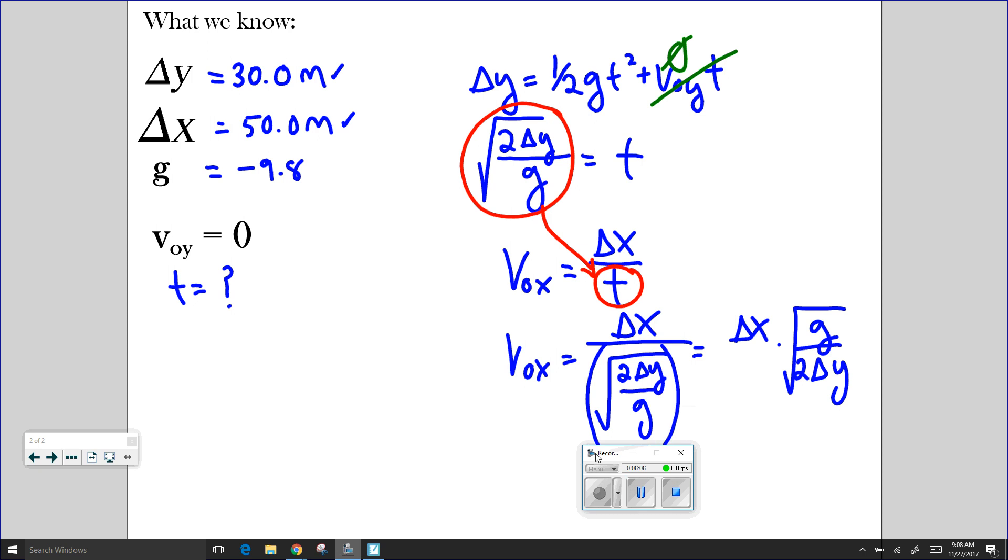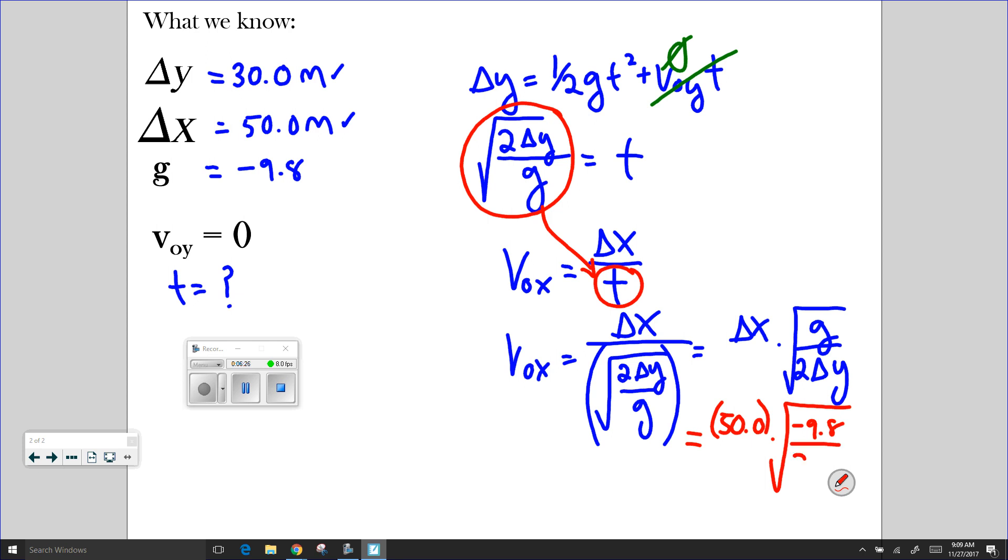Now, I have made an equation where all I have to do is substitute in my measurements. So to do this, I say delta x is going to be 50.0.